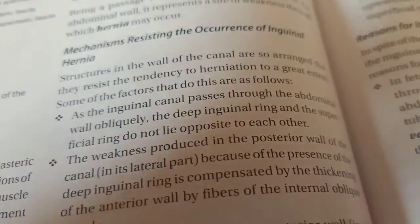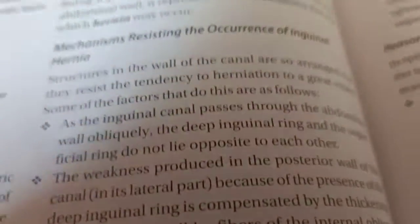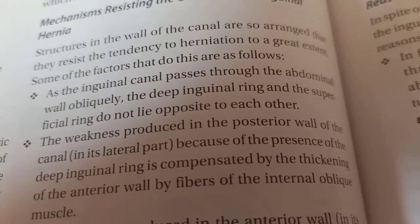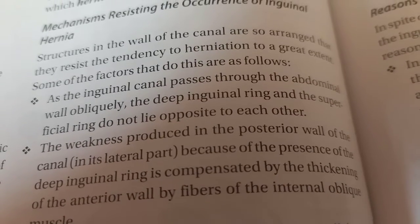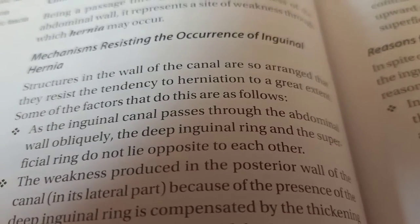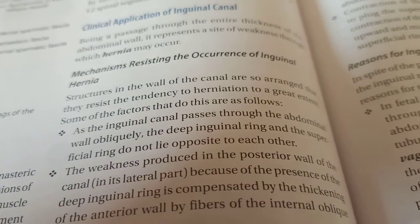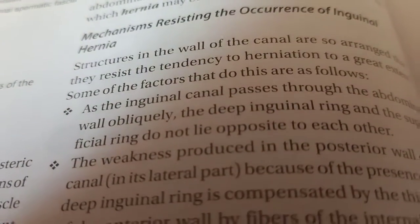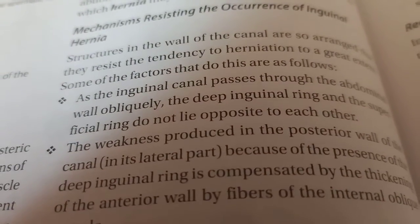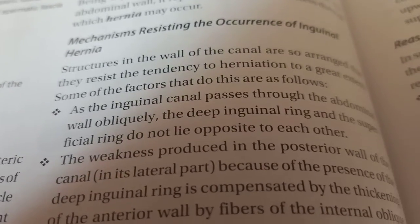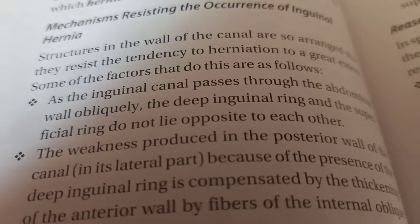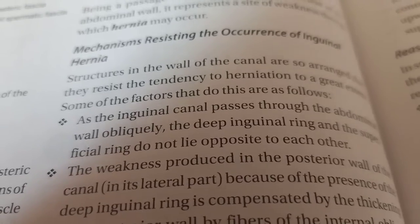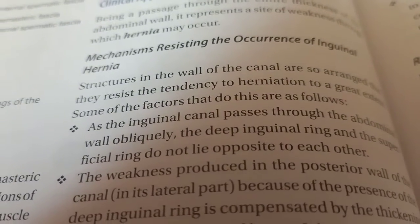The first mechanism is that the inguinal canal passes through the abdominal wall obliquely. The deep inguinal ring and the superficial inguinal ring do not lie opposite to each other. The inguinal canal is an oblique, intermuscular or musculoaponeurotic passage in the lower part of the anterior abdominal wall. This oblique orientation is one of the factors which prevents hernia.